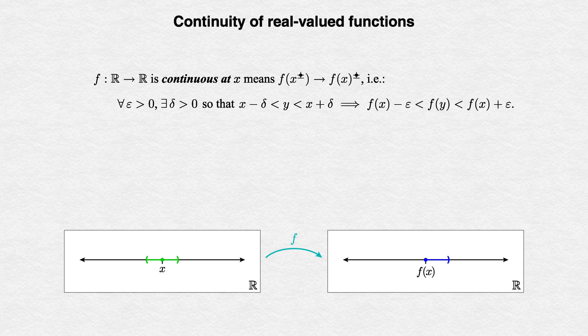What we've just written might remind you quite a bit of our definition for convergence of a sequence of real numbers, and this is no coincidence. The only differences are that the center of our target is set by f to be f(x), and instead of making capital N larger and larger to toss out more and more initial terms of a sequence, we make delta smaller and smaller to toss out the input points not as close to x. But the basic idea of shrinking the input set in order to make the output squeeze closer and closer to some target is identical.